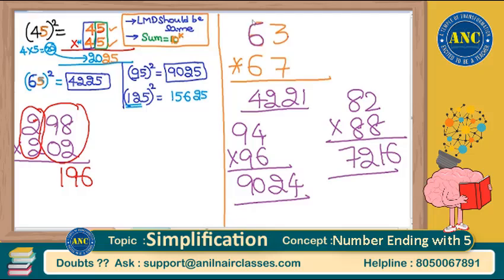Think logically: 98 is written in 2-digit format, 02 is also in 2-digit format — 2 digits each, so the answer should be 4 digits. But 98 into 2 gives only 196, which is 3 digits. Make it 4 digits by putting an extra zero: write it as 0196. The leftmost digit is 2; 2 into next number 3 — 2 into 3 is 6. Answer is 60196.